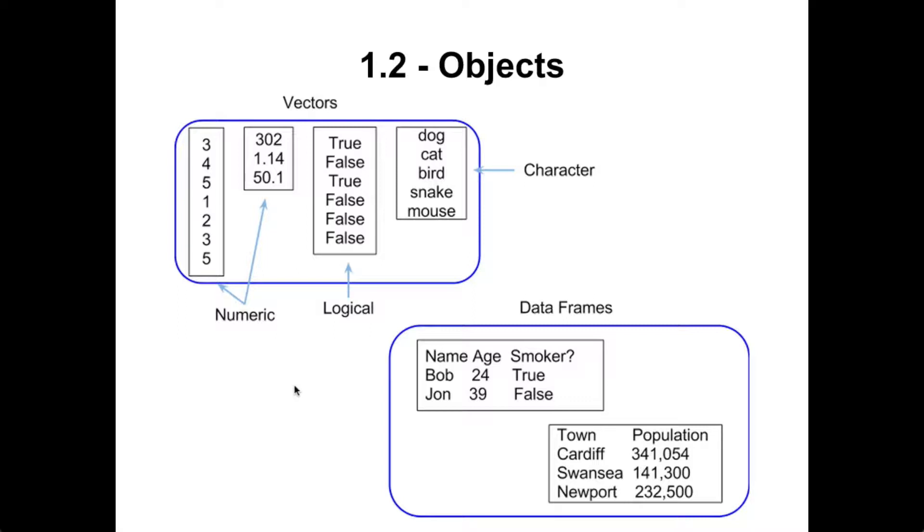The two classes we're going to really concentrate on in this course are vectors and data frames. Now all vectors are basically a collection of things of the same type. For example we've got some numeric vectors there, some logical boolean vectors there, and some character or string vectors there. And in other words we don't have dog, true, and three all in the same vector. If we did then true and three would also be strings.